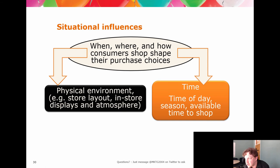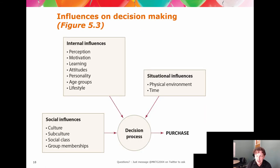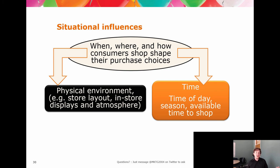Heading back into the second phase: we've done the internal influences — perception, motivation, learning, attitudes, personality, age group, lifestyle. That's all inside, all in your head, all about you and what shapes how you see the world. Now we talk about the world that's about to shape you. Situational influences describe how the environment shapes your choices. The two big ones are the physical environment and time.